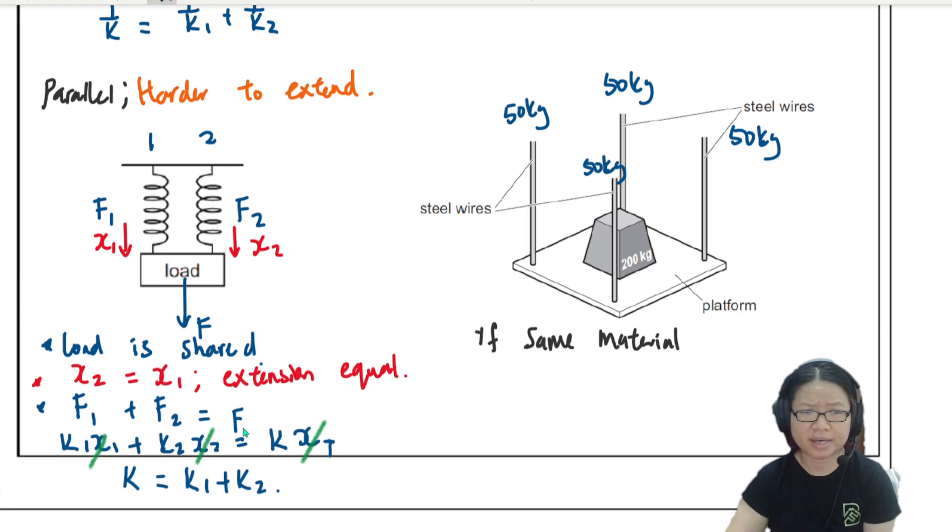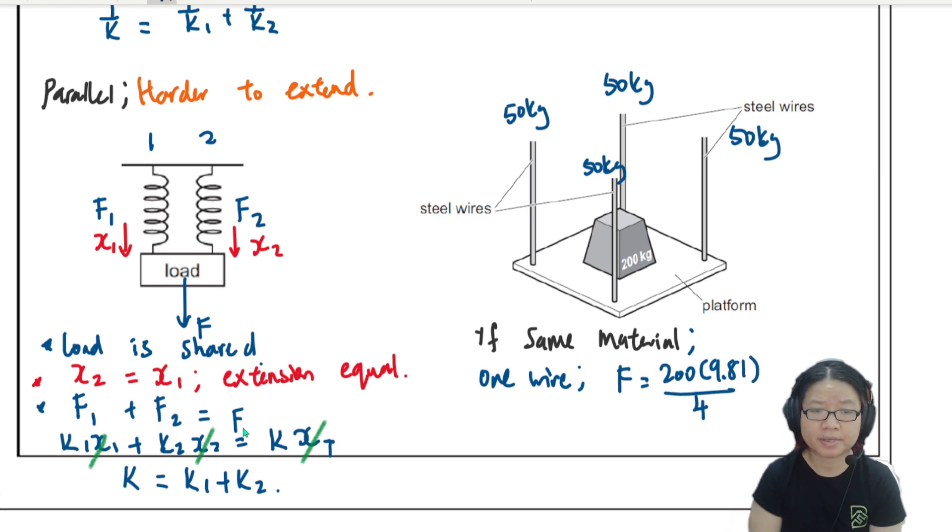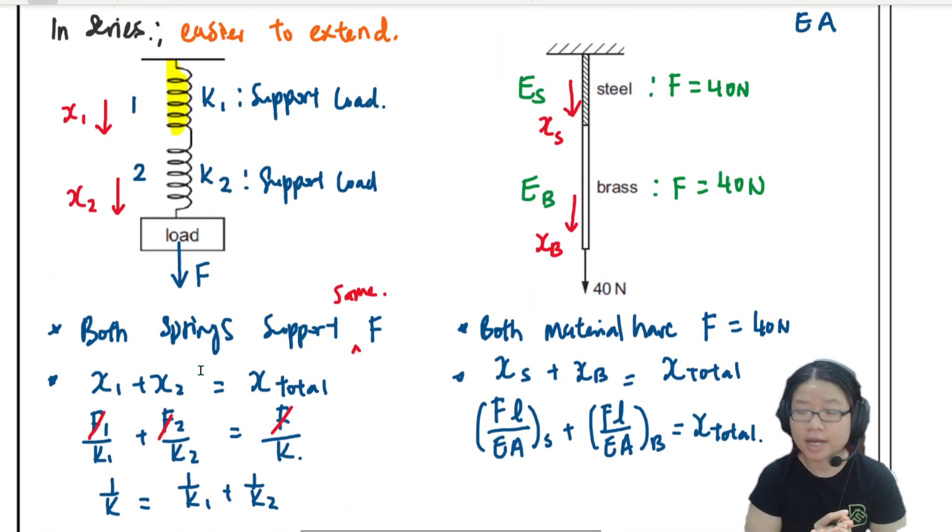Then I can say that I'll just take one wire. F will be equal to 200 times 9.81 divided by 4, 50 kg. And then after that, you just operate as usual. See what the question wants. So the main idea here is if they are parallel, the load is shared, the extension is equal. If they are series, the load is equal, the extension is total. You need to sum up the extension.